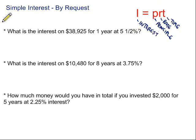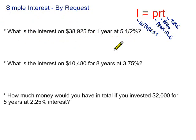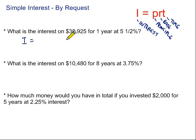Let's look at some examples. What is the interest on $38,925 for one year at 5.5%? That sounds like a problem where we'll use our simple interest formula. We're looking for the interest — that's the I. So we're going to have I equals. P is the principal, the amount invested: $38,925.